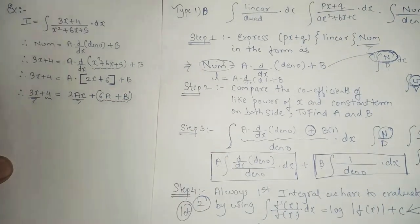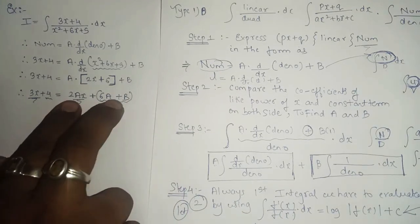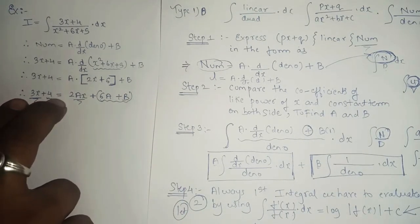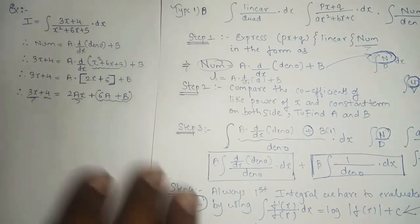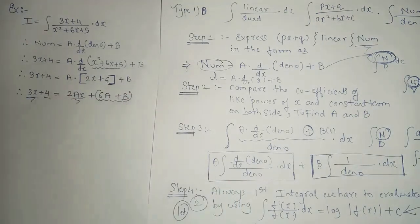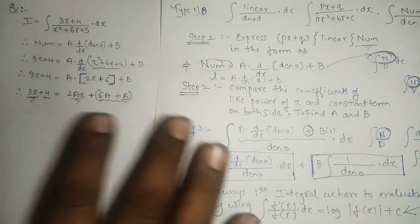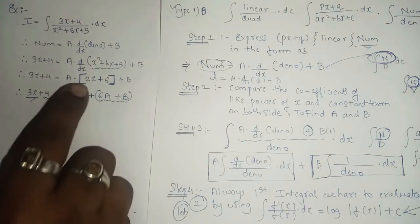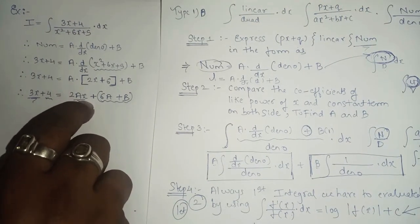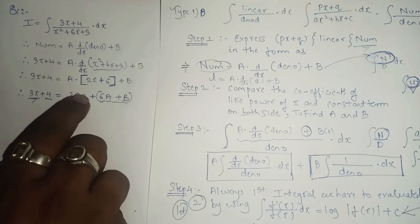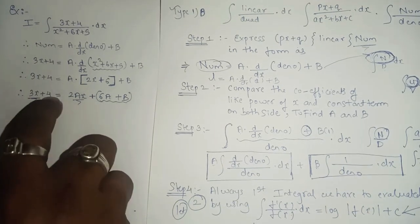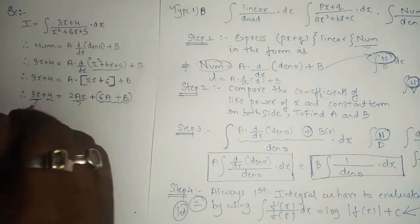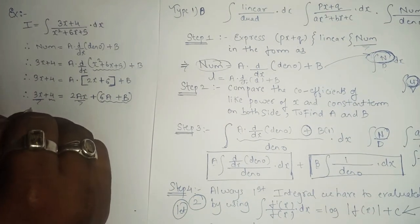We consider 6A plus B as one term, so the equation is balanced with two terms on each side. By equating the left-hand side and right-hand side coefficients of like powers, comparing the x term and the term without x, we get our two equations.